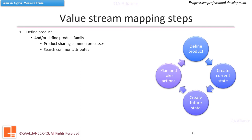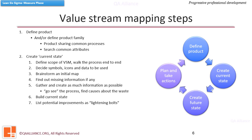We first must be clear about the product or family of products for which we are going to gather information. Then we start creating the current or as-is process. After defining the scope of VSM and deciding on the symbols to be used, we go and see the process end to end. The information is captured in writing, the initial map is brainstormed, and any missing information is further captured. Areas of improvement, wastes in the process, and other related information are captured in detail. A current map is created, and potential improvements are marked with lightning bolts.